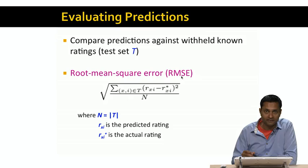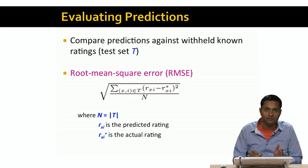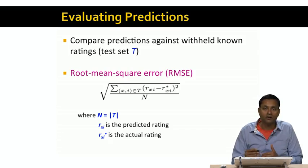We're going to take the difference of those two and square it. And sum of those squares across all the withheld ratings, and divide by the total number of withheld ratings, which is n. And just take the square root of that. So this is the root mean square error, or RMSE, and it's the most commonly used measure to evaluate a collaborative filtering system.